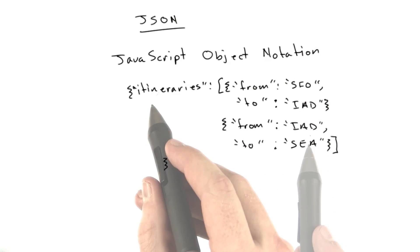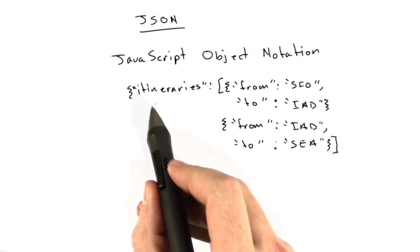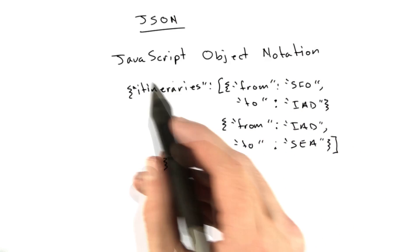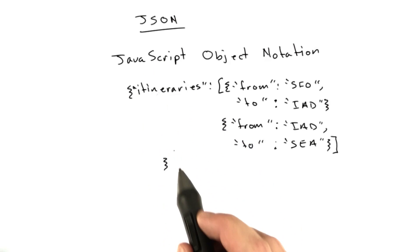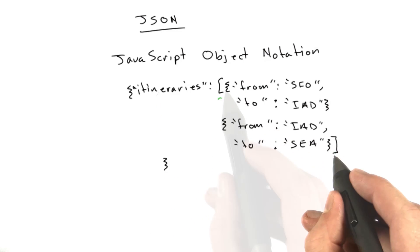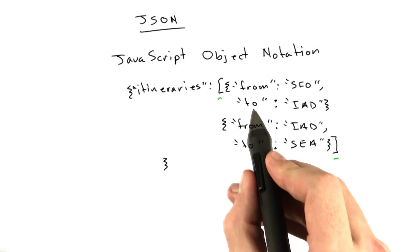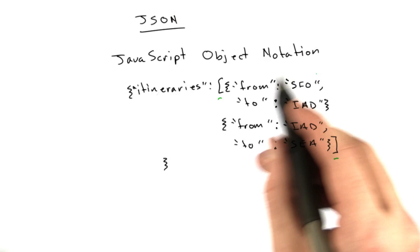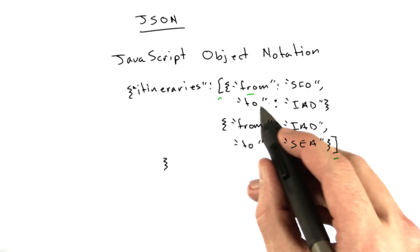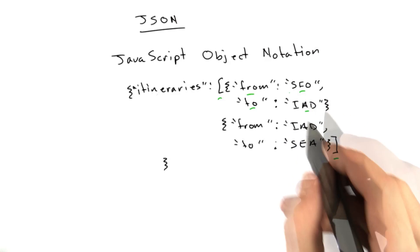It might look something like this. To use our travel search example from before, we have this dictionary structure. This looks a lot like Python code because Python and JavaScript have very similar syntax for dictionaries and lists. It might have a key called itineraries whose value may be a list of other dictionaries. We have a dictionary for each leg which may have a key for from and a key for to and a value for each of those.